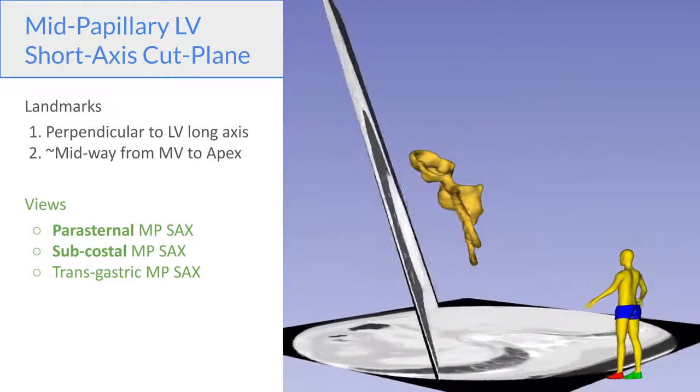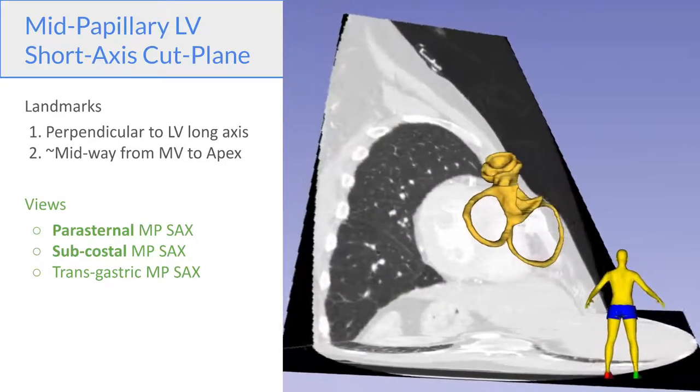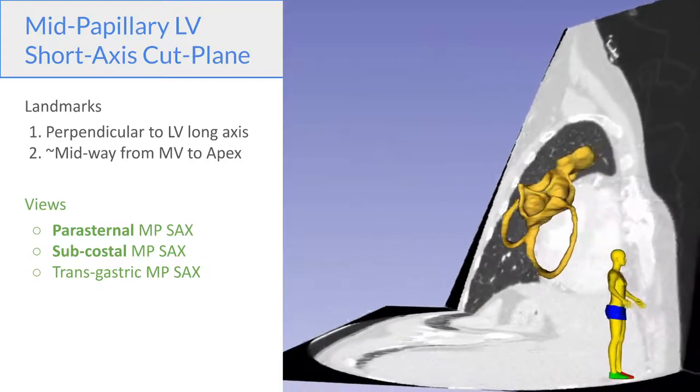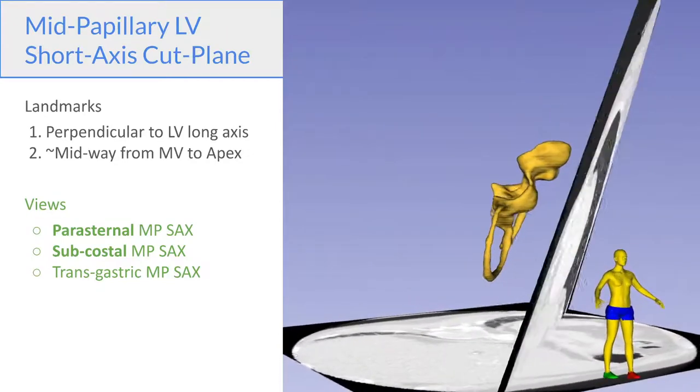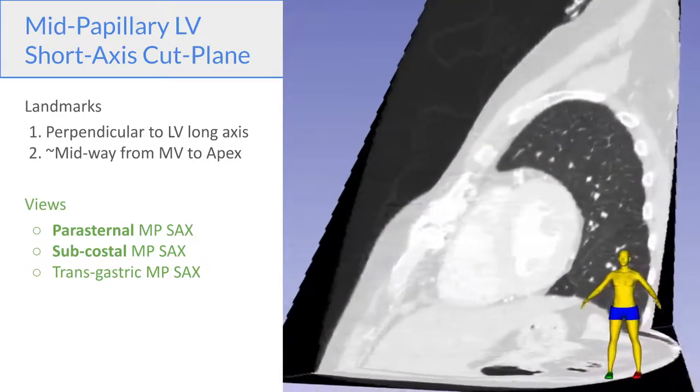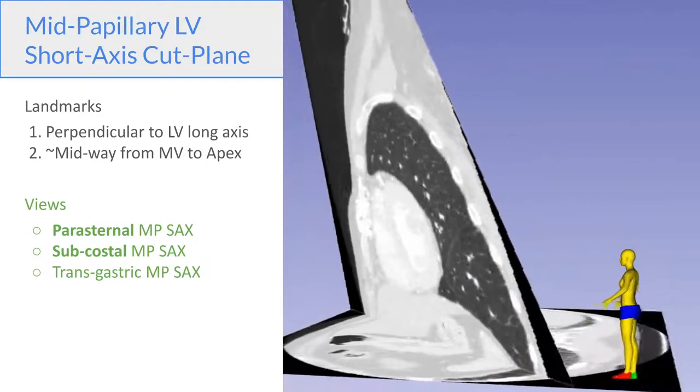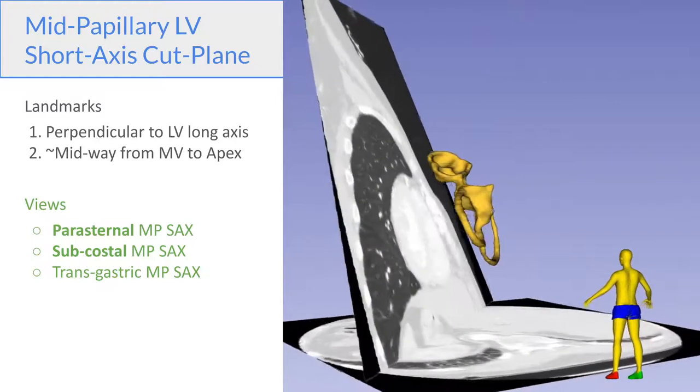The third major cut plane is the mid-papillary short axis cut plane which is defined as being perpendicular to the long axis of the LV. So if you imagine a straight line running from the middle of the mitral valve to the apex, that would be the long axis of the LV. And this is the plane that is perpendicular to that axis and is located in the middle of the ventricle. So at the mid-papillary level. And we can look at this cut plane from the parasternal window or the subcostal window.